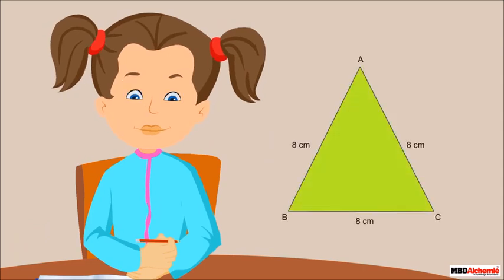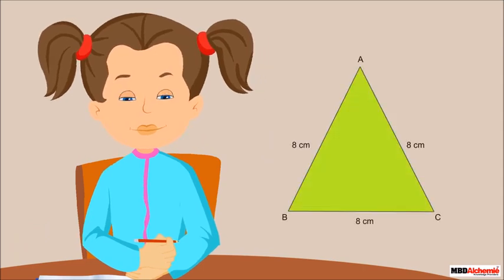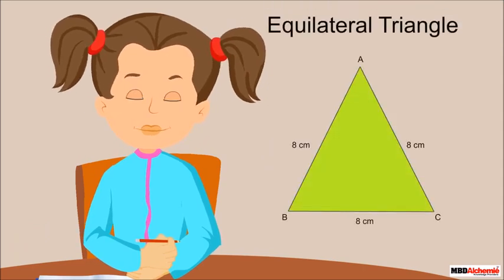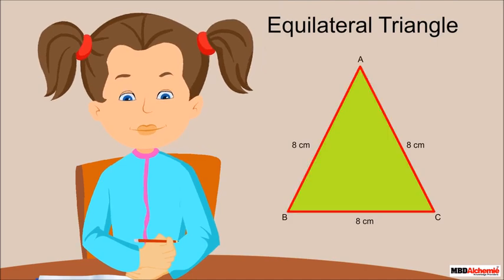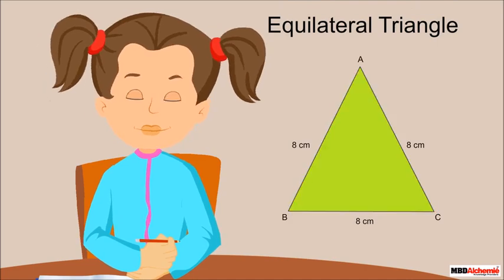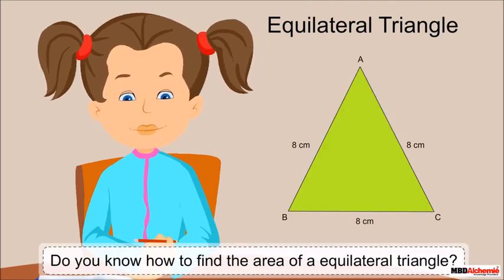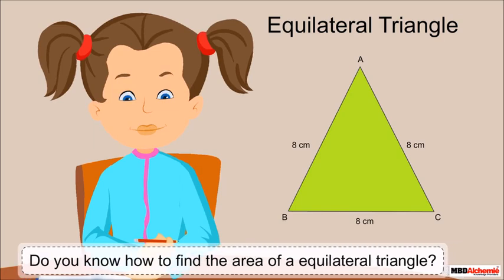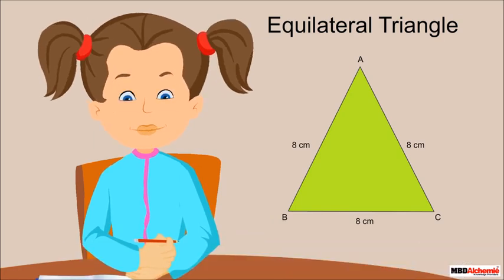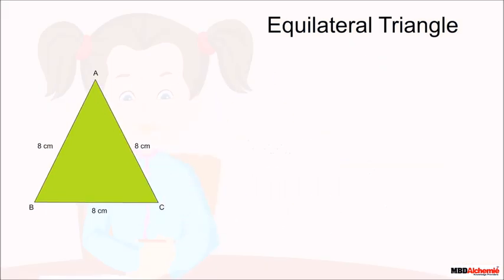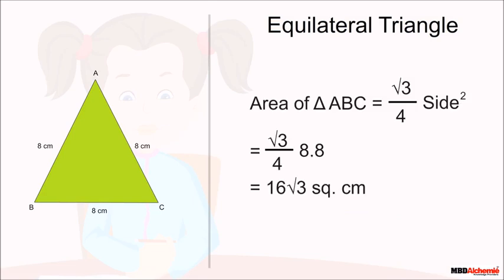Rhea excitedly says her triangle is an equilateral triangle because each side is 8 centimeters. She knows the formula to find the area of an equilateral triangle: it is √3/4 multiplied by side squared.